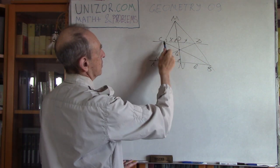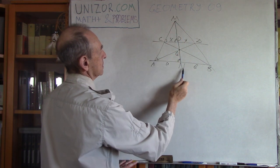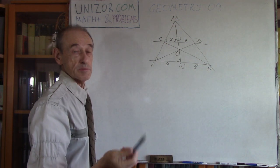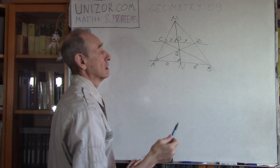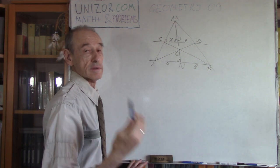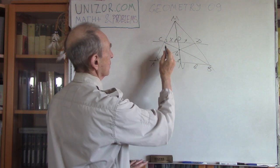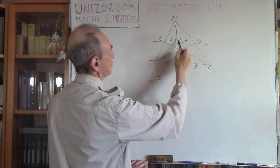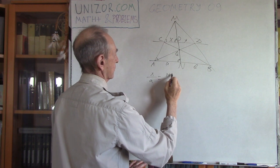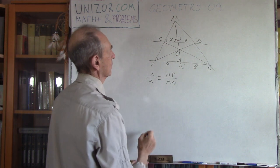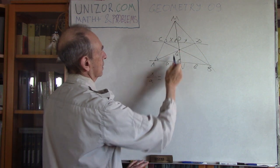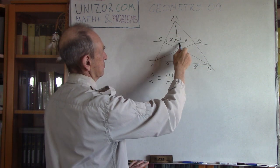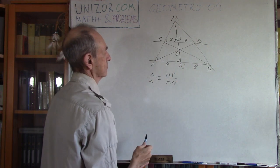Let's consider two triangles: MCP and MAN. All angles are exactly the same, so triangles are similar. From similarity of triangles follows the proportionality of the sides of these triangles. So X to A is like MP to MN.